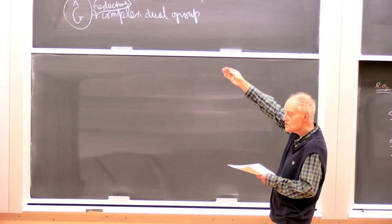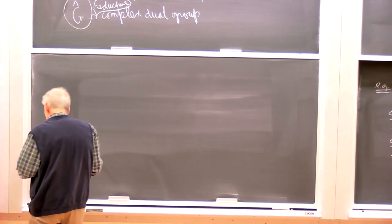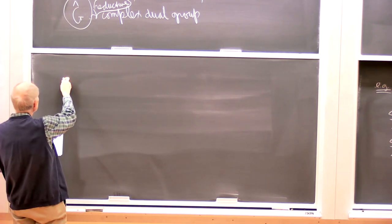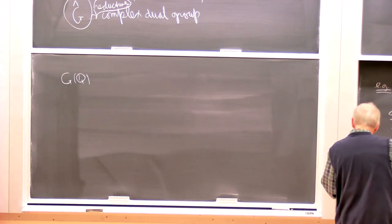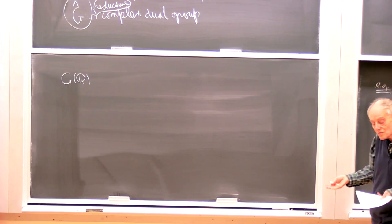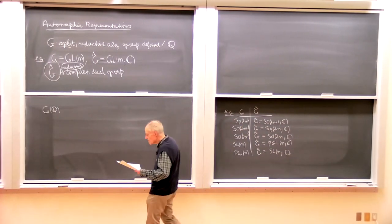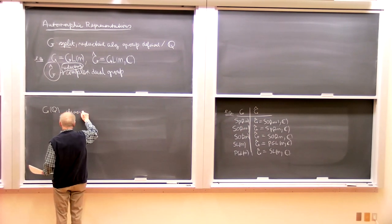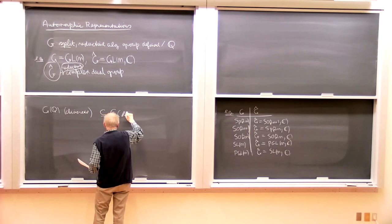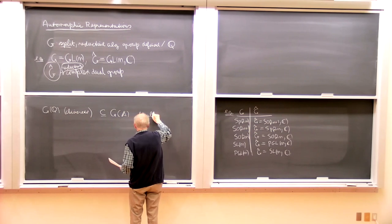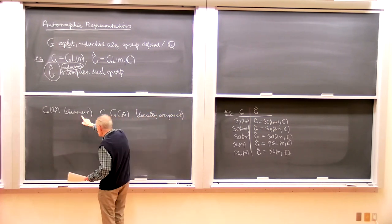Specifically, the object you want to attach to G that gives the ingredients of the Langlands program is to take G(Q) — the rational points in this group, like GL_n(Q). This is to be regarded as a discrete subgroup of the group of adeles G(A), which is a locally compact group. And G(Q) is a discrete subgroup of G(A).